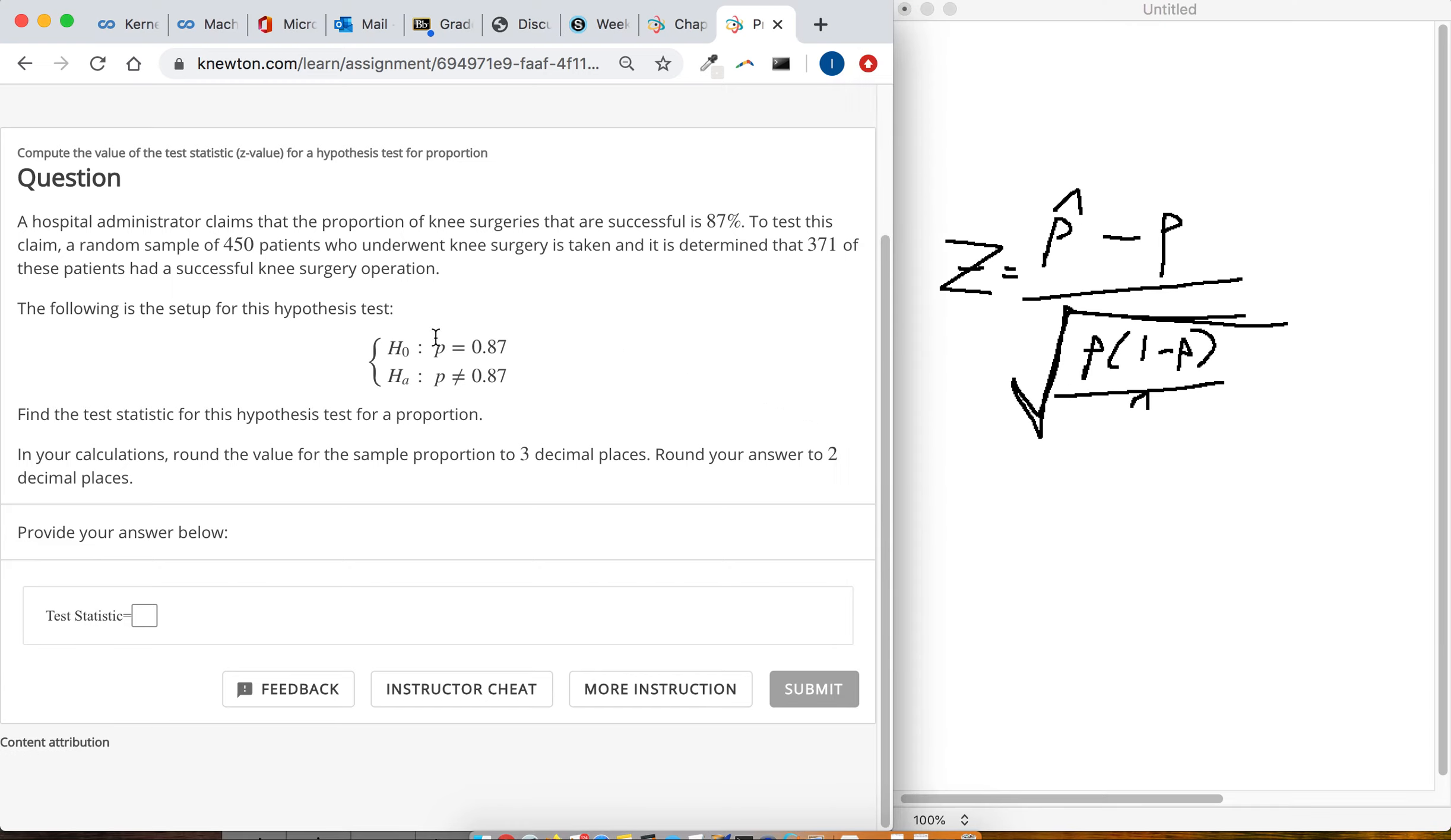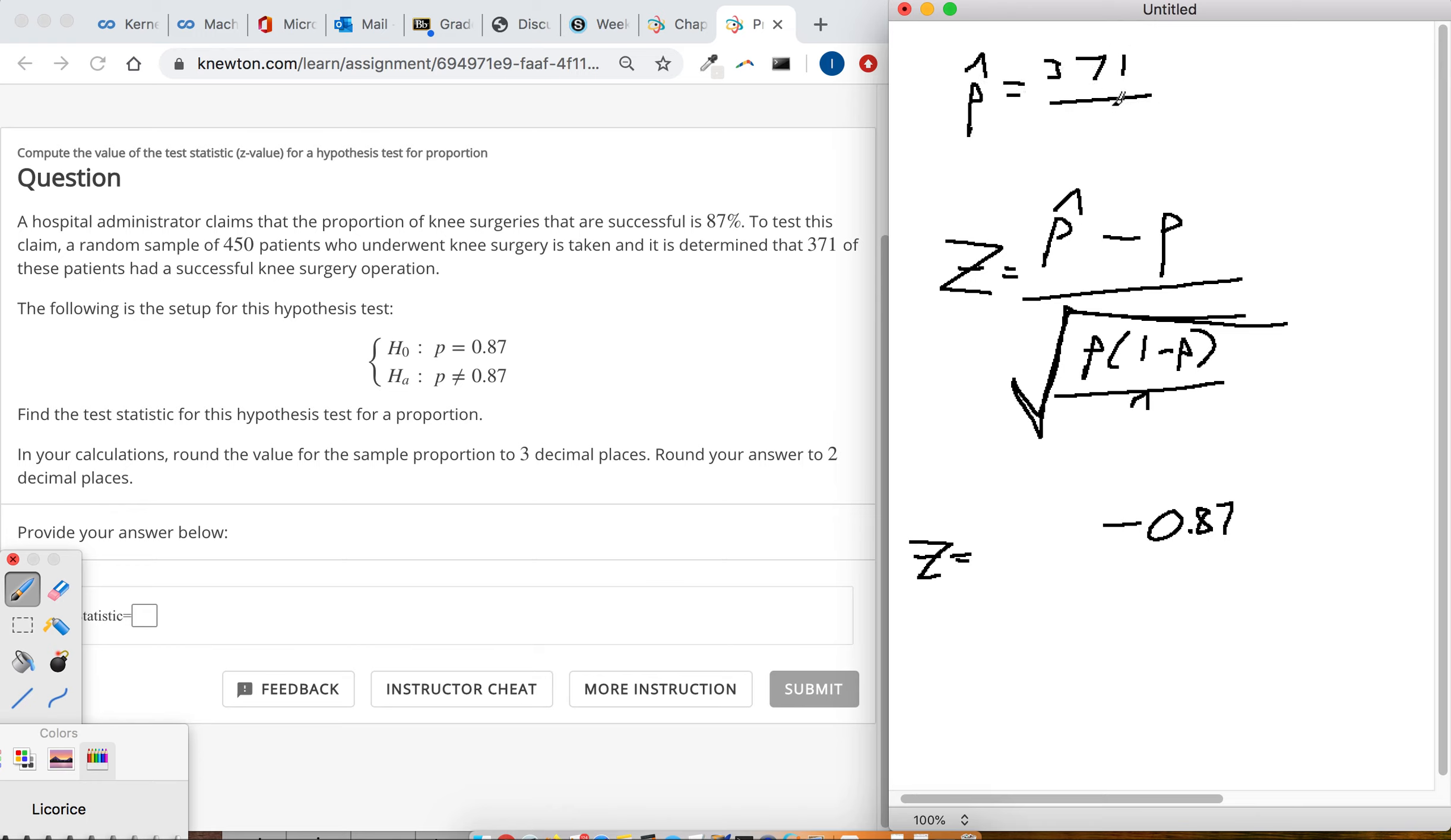Okay, so they give us this hypothesis test. Now to calculate the test statistic, we just need to crunch the numbers here. Hypothesized proportion p is 0.87. The sample proportion that we got—450 patients were taken and 371 had successful knee surgery.